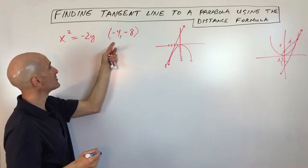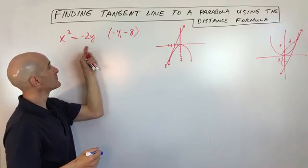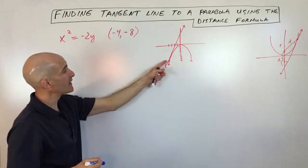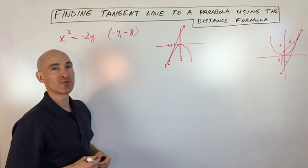So here what we want to do is we want to find the equation of the tangent line to this parabola, x squared equals negative 2y, through the point negative 4, negative 8. So I've drawn a little sketch here for us just so we can see it a little bit better.